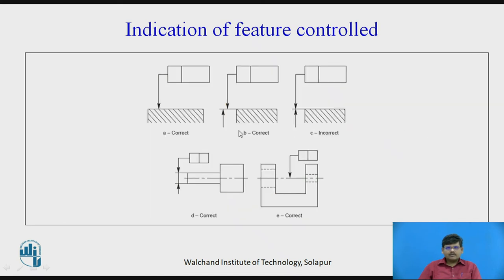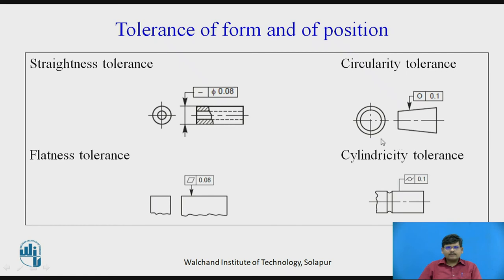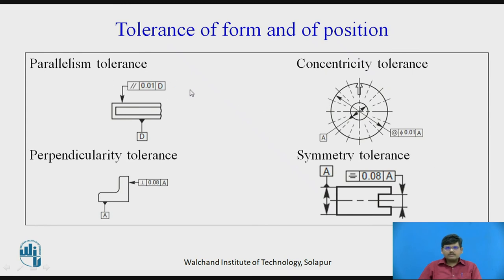Moving further to some examples — how to dimension the component using geometrical tolerances. Straightness of two lines is shown with the straightness symbol. Then flatness of a surface with its tolerance value. Then circularity tolerance and cylindricity tolerance. Then parallelism tolerance — two surfaces are parallel with a given value. Perpendicular: two surfaces are perpendicular with a variation of this value, perpendicular to surface A. Here surface D is named — this is parallel to D with a variation of 0.01.